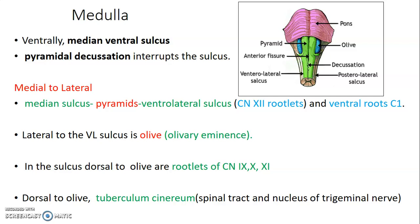Dorsal to the olives is the tuberculum cinereum, which contains the spinal tract and nucleus of the trigeminal nerve. So the anterior surface of the medulla contains: pyramids with corticospinal fibers, the ventrolateral sulcus with hypoglossal nerve and C1 rootlets, the olives, then the sulcus with glossopharyngeal, vagus and accessory nerves, followed by the tuberculum cinereum with the spinal tract and nucleus of trigeminal nerve.